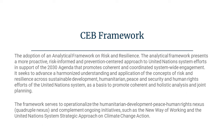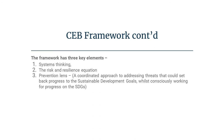The framework serves to operationalize the humanitarian-development-peace-human rights Nexus — the Quadruple Nexus — and complements ongoing initiatives such as the New Way of Working and the UN system strategic approach on climate change action. The framework has three key elements: systems thinking; the risk and resilience equation; and a prevention lens — a coordinated approach to addressing threats that could set back progress on the SDGs, whilst consciously working for progress on them.